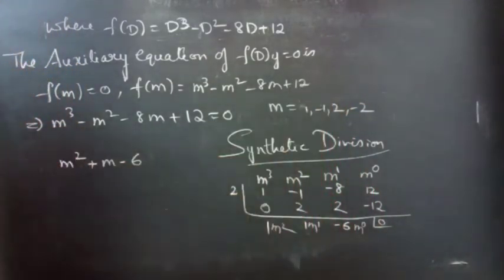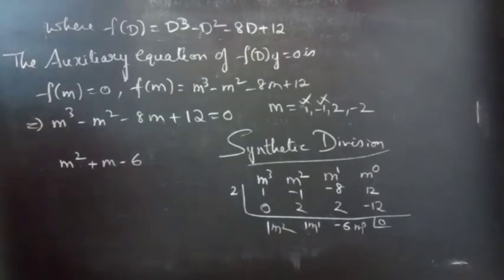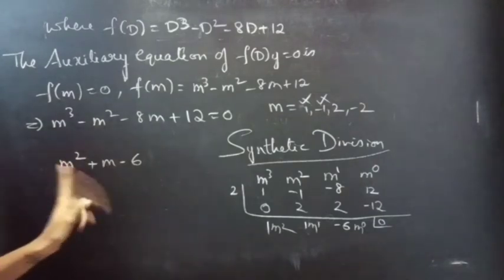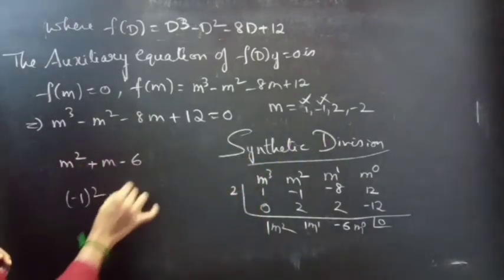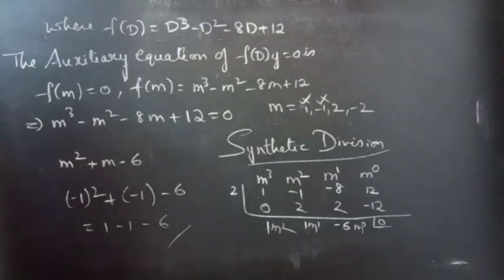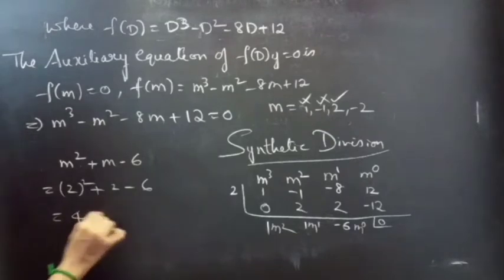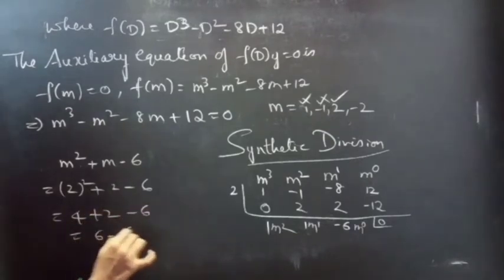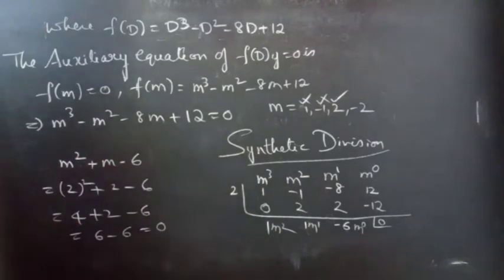From the synthetic division result we get the polynomial m square plus m minus 6. Now we'll see which m satisfies this polynomial. If we put 1 we get 1 plus 1 minus 6, which equals minus 4. If we put minus 1 we get 1 minus 1 minus 6, which is also not 0. So directly we go for m equals to 2: 2 squared plus 2 minus 6 equals 4 plus 2 minus 6, which equals 0. So m equals to 2 satisfies this polynomial as well.